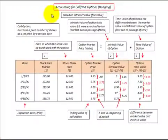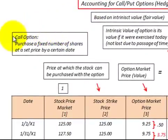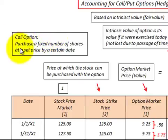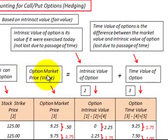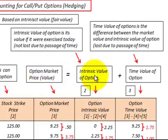Here we're going to be looking at accounting for call or put options as hedging investments, based on the intrinsic value or the fair value of the option. We're going to be looking at a call option where we buy this option and then we can purchase a fixed number of shares of stock at a set price at a certain date. The market value of the option is going to be based on the intrinsic value of the option plus the time value of the option.